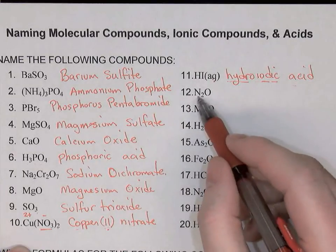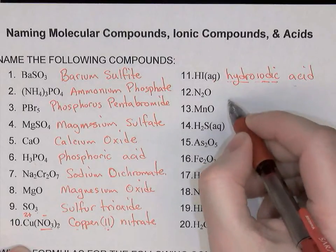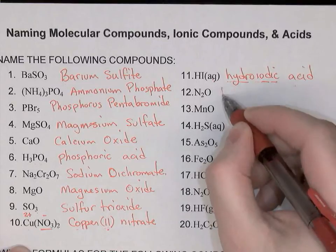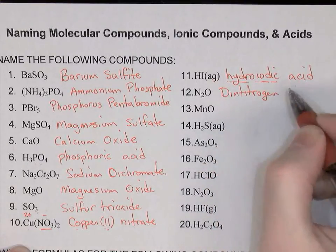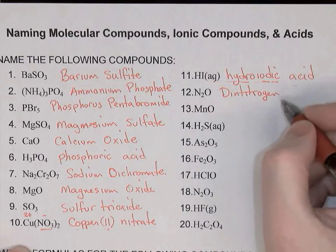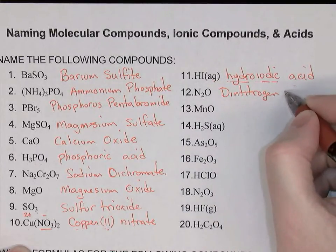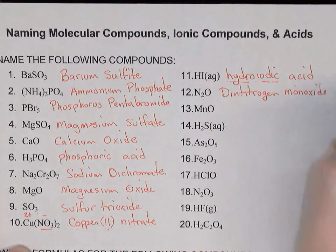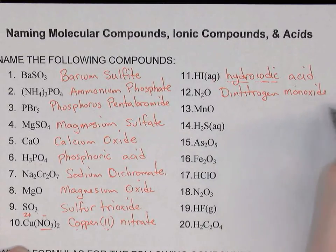N2O: two nonmetals, so this is a molecular compound. We're going to need prefixes. Two nitrogens: dinitrogen. And one oxygen: mono means one, so monoxide. So the name is dinitrogen monoxide.